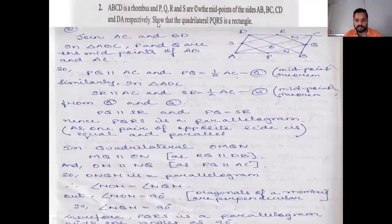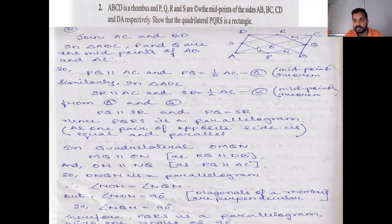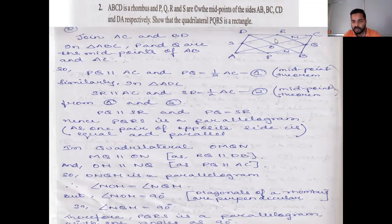Question 2: ABCD is a rhombus and PQRS are the midpoints of the sides. Show that quadrilateral PQRS is a rectangle. First, PQRS is a parallelogram — we can show this just like question number 1, using the midpoint theorem.